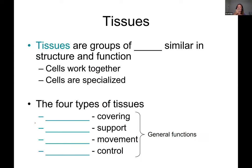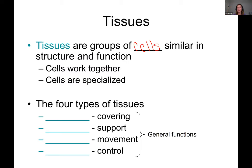Remembering the levels of organization: atoms and molecules hook together to make cells; cells working together make tissues. Tissues are groups of cells that are very similar in their structure and function. The cells in a tissue work together and are specialized for that tissue. For example, the neuron is a specialized cell in nervous tissue whose function is to send signals, just as nervous tissue like the brain communicates to different areas of the body.